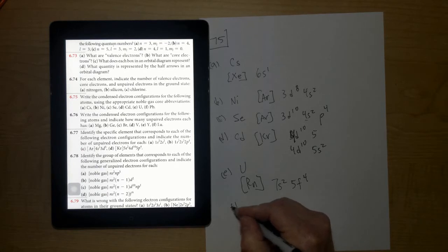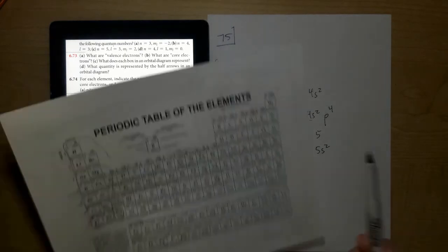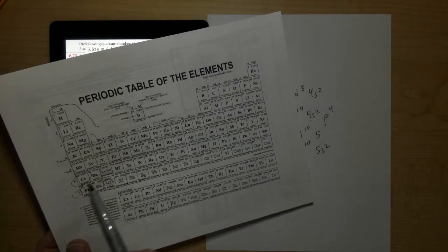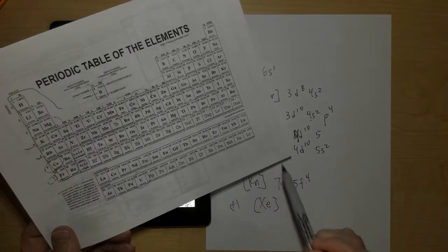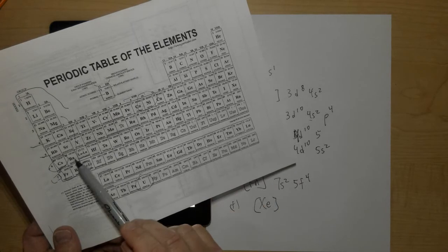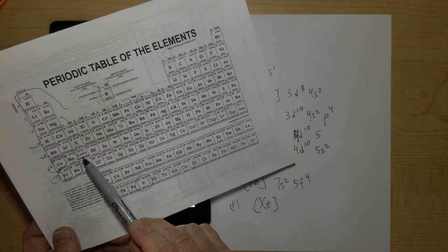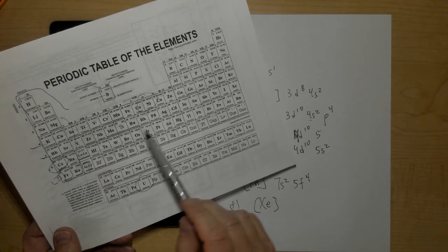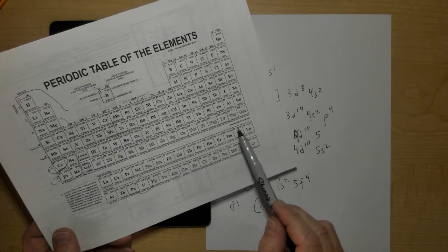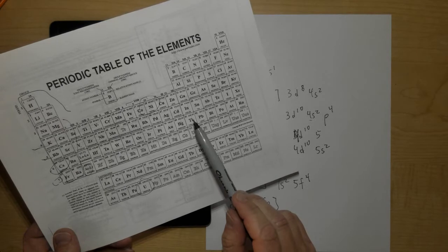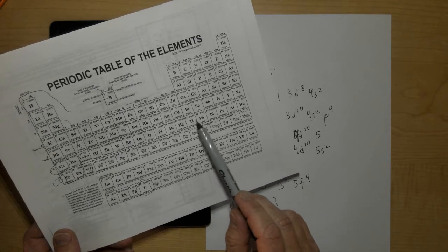And then the last one, letter F, lead. Lead's right here. The noble gas preceding it would be xenon, so we'd put Xe. And then we'd have 6S2, 5D10. We'd also have 4F14. And then we'd have the 6P, 1, 2.